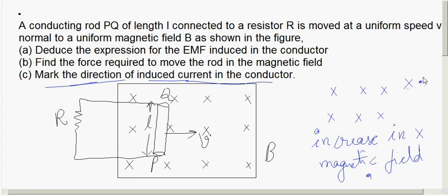By Lenz's law, the induced EMF opposes the very cause producing it. The cause here is the cross magnetic field. So the induced current must produce a magnetic field opposite in nature — a dot field.